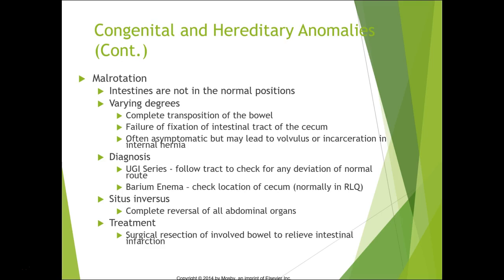Malrotation means the intestines are not in their normal position — varying degrees, including complete transposition. It's critical to use markers correctly on X-ray or MRI to confirm it's truly malrotation. Failure of fixation of the intestinal tract to the cecum is often asymptomatic but may lead to volvulus or incarcerated internal hernia. We use upper GI to check the ligament of Treitz and a barium enema to check cecum location. Situs inversus is complete reversal of all abdominal organs.